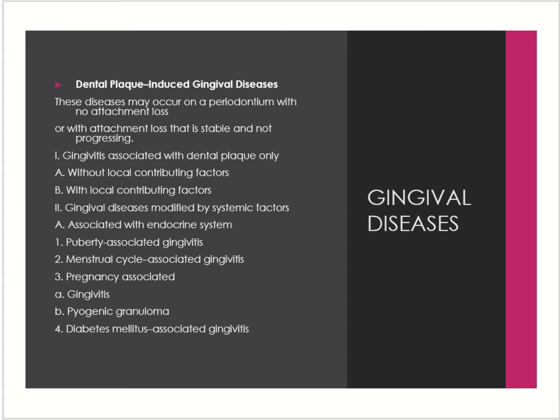The most common cause of gingival diseases modified by systemic factors is diabetes mellitus, and if we're talking about pregnancy-associated cases, you will often find a pyogenic granuloma. A pyogenic granuloma is a purplish dark-red discrete swelling present on the gingiva in the second trimester, and it is self-healing — it will go away after your pregnancy is over.